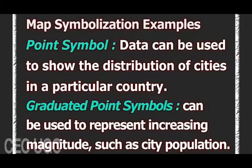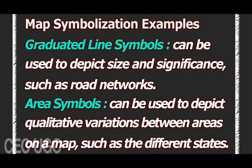Point symbol data can be used to show the distribution of cities in a particular country. Graduated point symbols can be used to represent increasing magnitude such as city population. Graduated line symbols can be used to depict size and significance such as road networks. Area symbols can be used to depict qualitative variations between areas on a map, such as the different states.